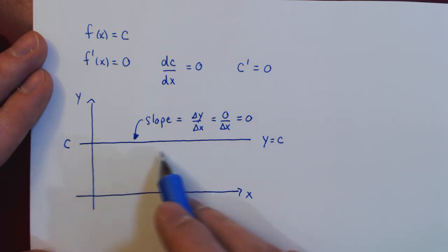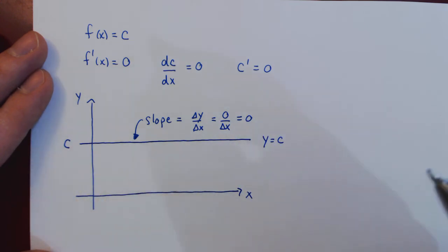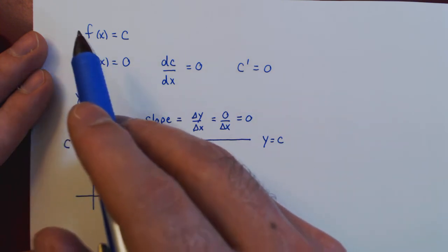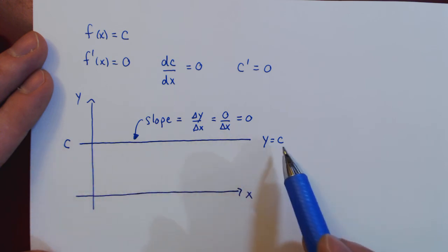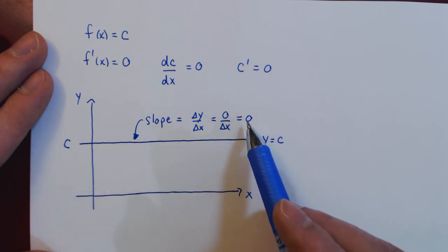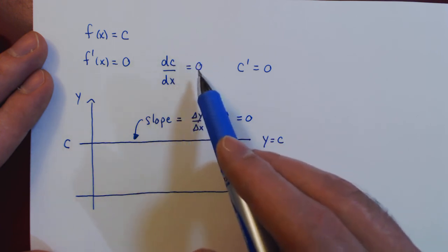And so the slope of a horizontal line is always equal to zero. But if you remember, the derivative is nothing but a fancy word for the slope of the function. Therefore, the slope of the function, when the function is constant, is always equal to zero. Therefore, the derivative of a constant is equal to zero.